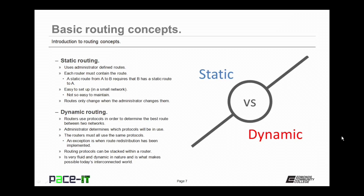Then there's dynamic routing. This is where routers use protocols in order to determine the best route between two networks. The administrator determines which protocols will be used on the routers. In order for the routers to communicate, they must all be using the same protocols. There is an exception to that, and that's route redistribution. An administrator can configure a router to take one dynamic protocol and transform it into a different routing protocol. This is the only case when routing protocols can be different across a network.